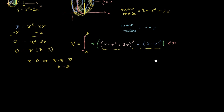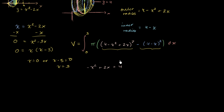So what is this thing squared? We're going to have to do a little bit of polynomial multiplication here. So we're going to have negative x squared plus 2x plus 4 — I just switched the order of these terms — times negative x squared plus 2x plus 4. So we're just going to multiply these two things.